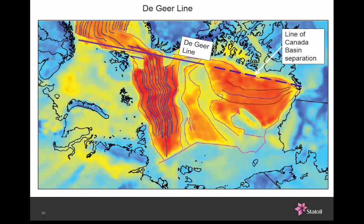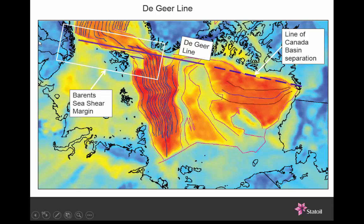Lastly, I want to come to the De Gea Line — an extremely impressive lineament. Without too much imagination, you can see it might have facilitated the separation and rotation of the Canada Basin. It might actually mark the line of separation, although it's in fact a very old line. It's best known in this portion here — the Barents Sea Shear Margin. To position you: this is Norway, this is the Norwegian Barents Sea, this is the island of Spitsbergen, and this is the shear margin. This is one of the best-studied shear margins in the world.